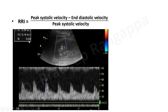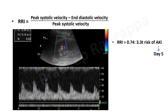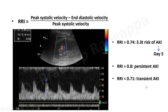As you see here, the resistive index is 0.58. The reference for intensivists to remember is: renal resistive index should be less than 0.7. If it is more than 0.74, it indicates the patient is at a 3.3 times risk of developing acute kidney injury by day 5. If renal resistive index is more than 0.8, the patient may develop persistent AKI. If renal resistive index is less than 0.71, there is a risk of possible transient AKI, but it would improve. The lower the RRI, the better.